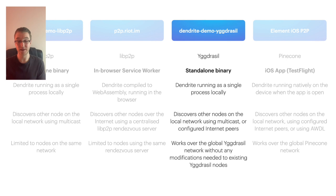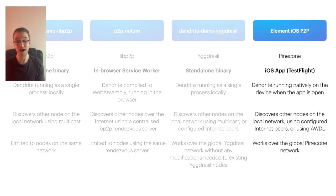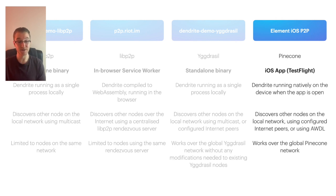Furthermore, existing Yggdrasil nodes don't require any modifications whatsoever in order to act as suitable routers for our demo. And finally, there's the most recent demo, which we built on iOS — an attempt to explore what P2P Matrix might feel like if it was running on a mobile device.